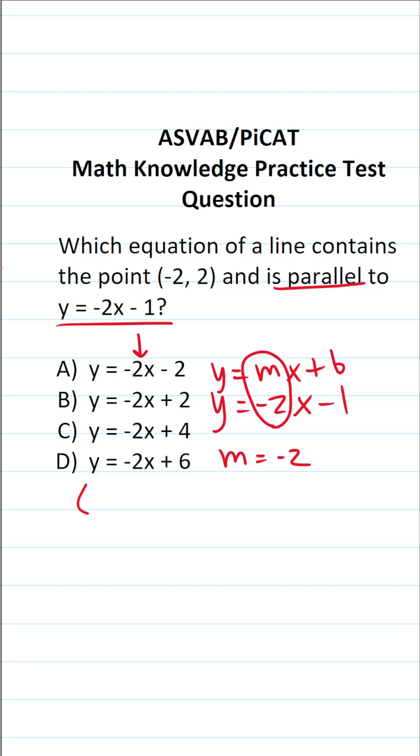That said, we also know that one point on the line is negative 2, 2, that is to say this is x₁ and this is y₁.